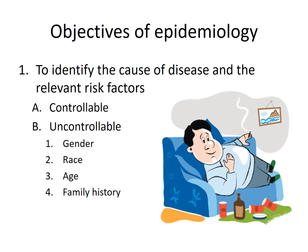If we look at the different objectives of epidemiology, the first one is to identify the cause of disease and the relevant risk factors. When we look at different risk factors, some are controllable and some are uncontrollable. The uncontrollable ones are factors we really don't have any control over — factors we're born with such as gender, race, and age. As time goes on we don't have any control over turning back time. Family history such as genetics — things like that we can't change about ourselves.